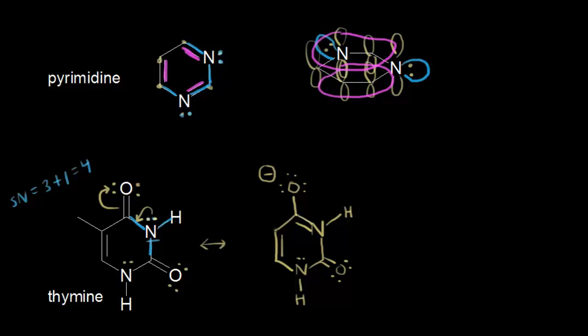Now let's analyze the nitrogen after drawing the resonance structure. For the steric number of this nitrogen: there's a sigma bond here, a sigma bond here, and a sigma bond here — and now no lone pairs around this nitrogen. So the steric number equals 3 plus 0, which is 3. With a steric number of 3, this nitrogen is sp2 hybridized and now has a p orbital. The lone pair of electrons that was on this nitrogen — shown in magenta — is no longer localized to that nitrogen; it's actually delocalized and can now participate in resonance.